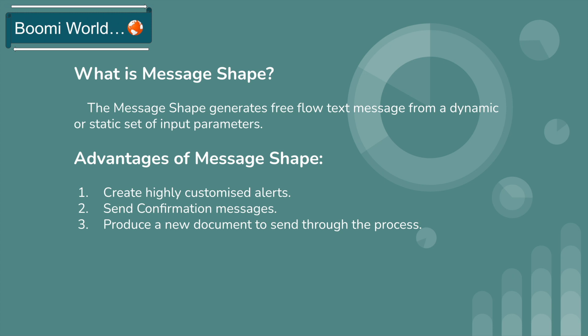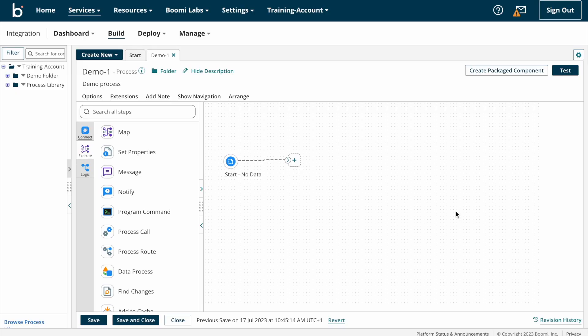Suppose you are getting some data from one source system and you are processing that data step by step. At some point you don't want the data which is coming from the source and you want to generate a new document — at that time you can use message shape. These are the advantages of message shape.